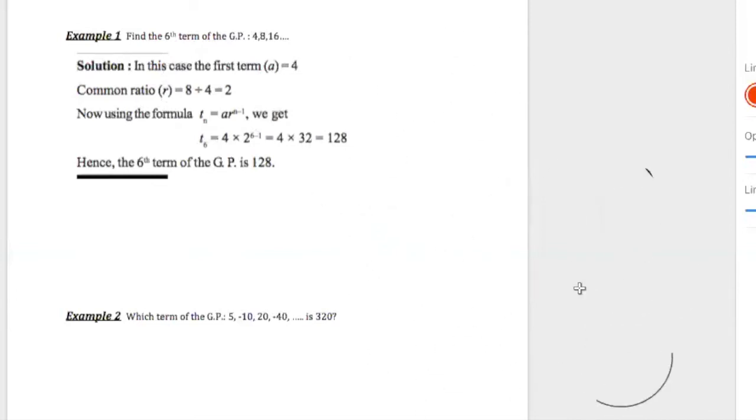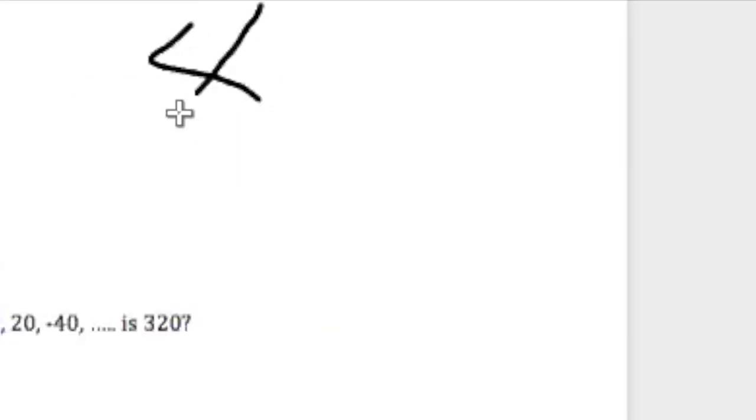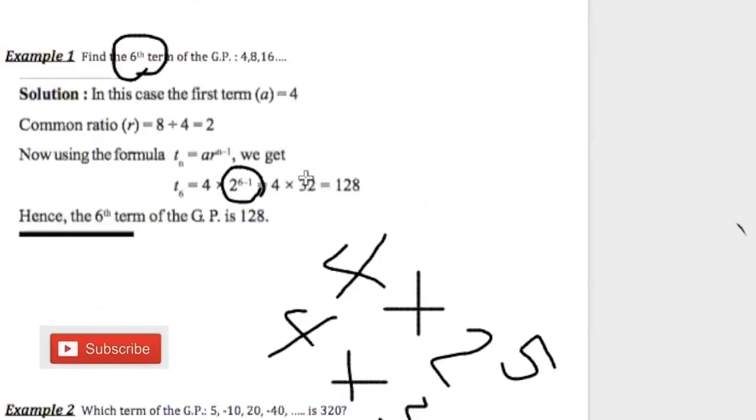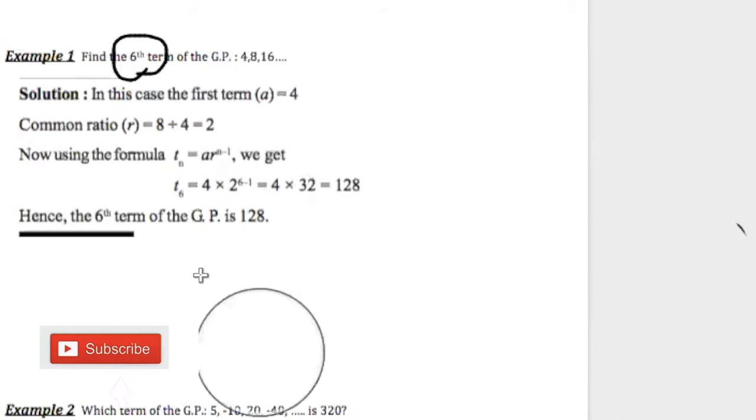Once we have all of this information, what is A, what is R, we can go ahead and calculate the 6th term. The nth term formula is what we have here, A times R to the N minus 1, where we know that A is 4, R is 2, and N is 6 because this is the 6th term. So you have 6 minus 1. 6 minus 1 is 5. Do not enter this as is in the calculator. Easy to make a mistake. So 6 minus 1 is 5. You enter 2 to the 5th, and some persons often know that 2 to the 5th is 32. So you have 4 times 32, which is what we have here, to give you 128. So the 6th term is 128.